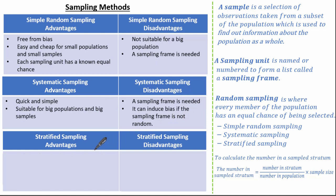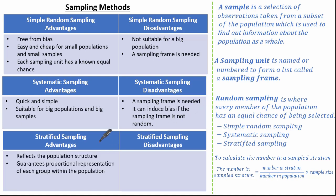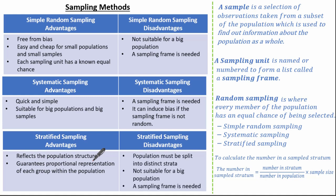For stratified sampling, the advantages are that it reflects the population structure and guarantees proportional representation of each group within the population. Disadvantages are that the population must be split into distinct strata, it's not suitable for big populations, and a sampling frame is needed.